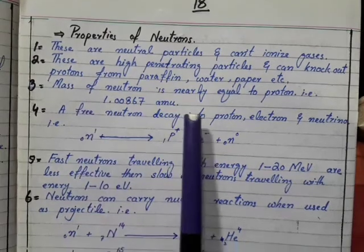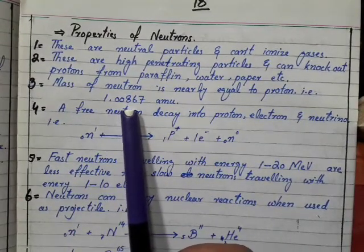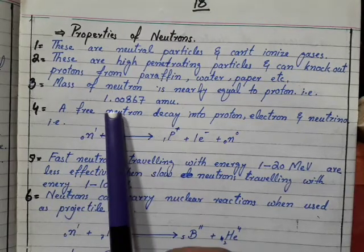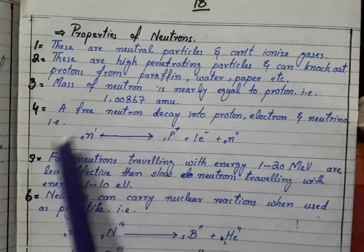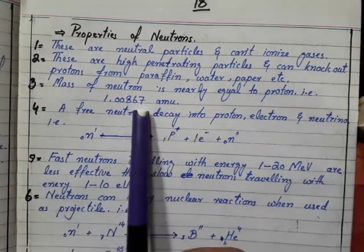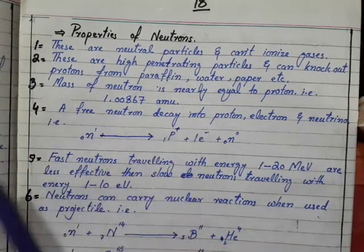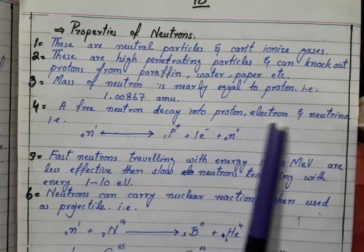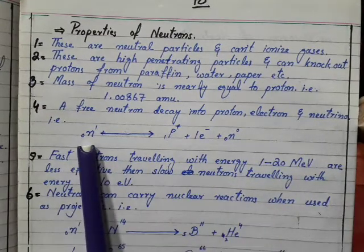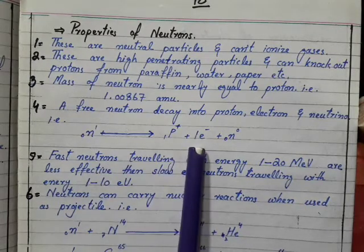Mass of the neutron is nearly equal to the proton, 1.00867 amu. Proton mass was approximately 1.00758 amu, so neutron mass is slightly greater than proton. A free neutron decays into proton, electron and neutrino.